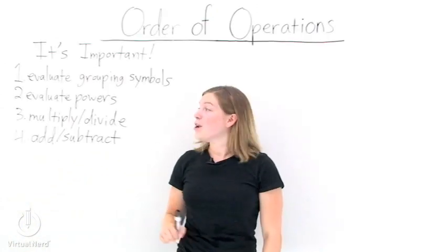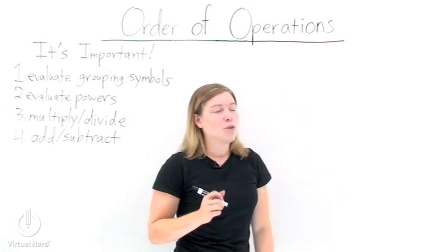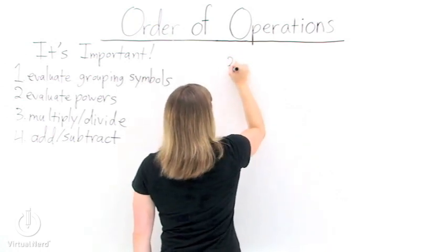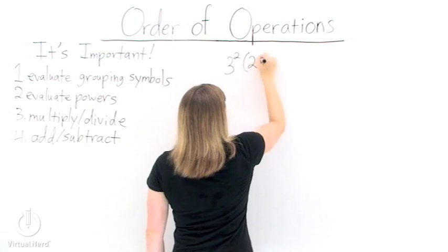So now that we know the order of operations, let's take an example. Once where we use the order of operations correctly and once where we don't.